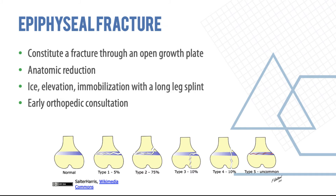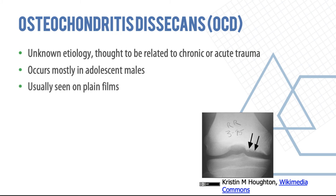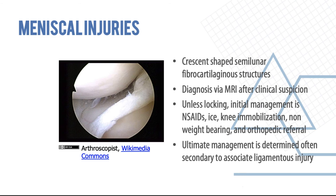Osteochondritis dissecans is of unknown etiology, related to chronic or acute trauma, and usually occurs in adolescent males — it can be seen on plain films. The term itself: osteo means bone, chondritis means cartilage, and dissecans means dissolution. It has a poor prognosis if closed; if loose, it may require operative intervention. Meniscal injuries are very common — the menisci are crescent-shaped fibrocartilaginous structures. Diagnosis is via MRI. Unless the patient presents with locking, conservative management with immobilization, non-weight bearing, and orthopedic outpatient referral is appropriate.